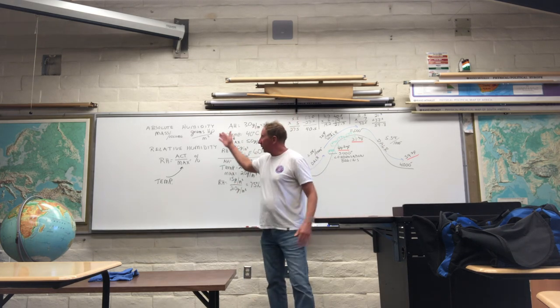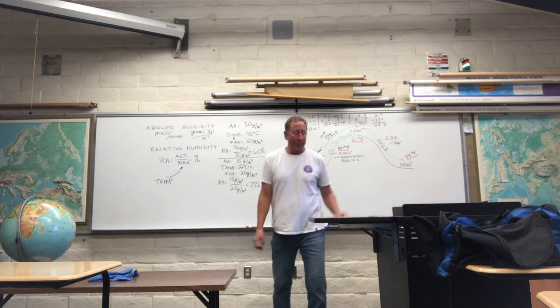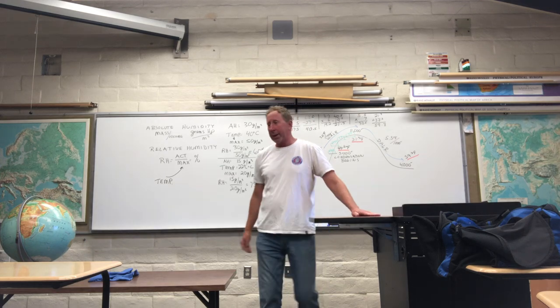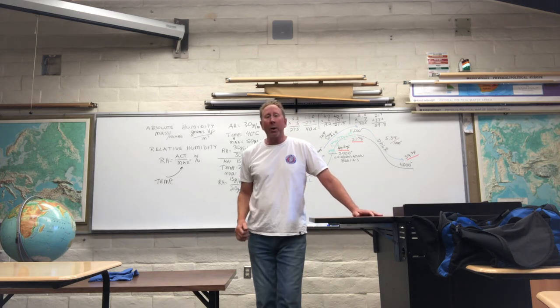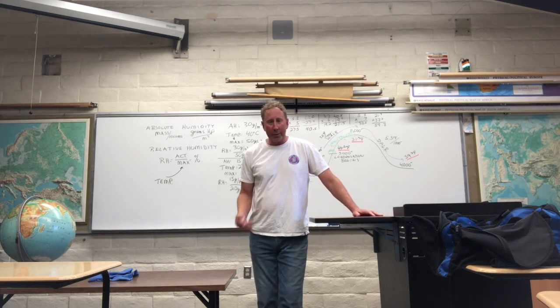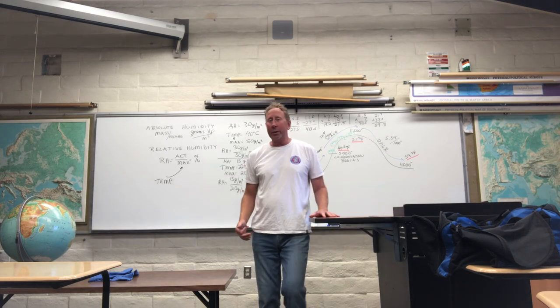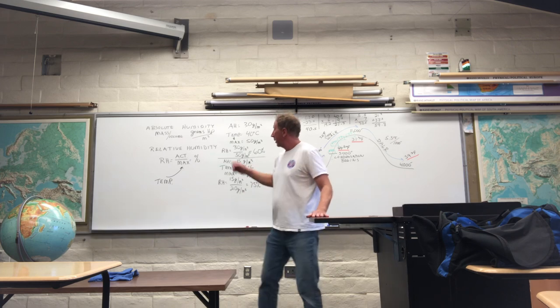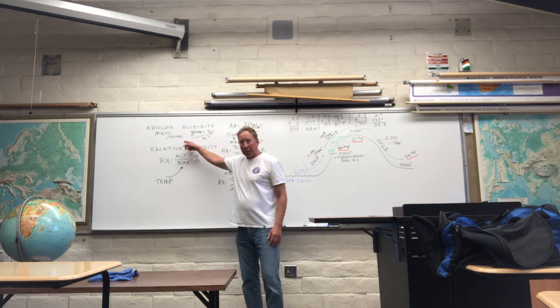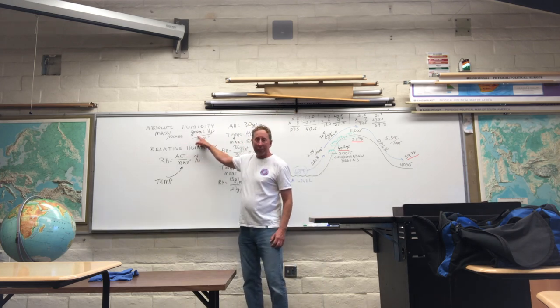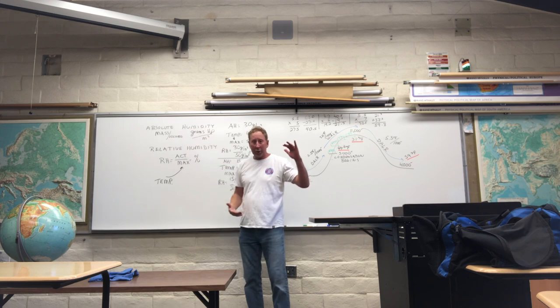First of all, absolute humidity is the amount of water vapor in the air — H2O in the air, moisture in the air — measured as mass over volume. The mass is grams of water vapor; the volume is a cubic meter.